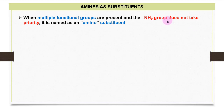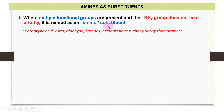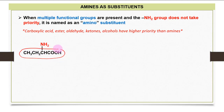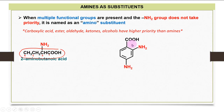Another naming pattern is when the amine acts as a substituent. This occurs when multiple functional groups are present and the NH2 group does not take priority. Carboxylic acid, ester, aldehyde, ketone, and alcohol all have higher priority than amine. For example, with a COOH group present, the parent is butanoic acid (4 carbons), and an amino group at position two gives 2-amino-butanoic acid. With COOH on a benzene ring, the parent is benzoic acid, and amino groups at positions two and four give 2,4-diaminobenzoic acid.